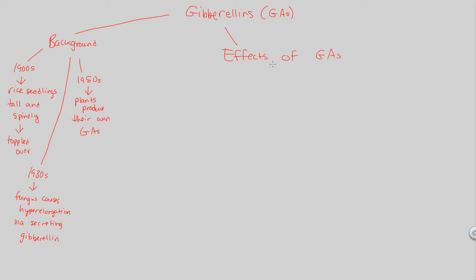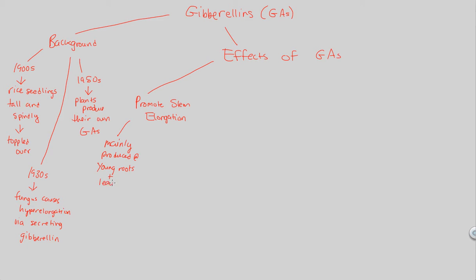Effects of GAs — they have three major effects. First and foremost, GAs promote stem elongation. A lot of plant hormones are involved in growth, and GAs are also involved in stem elongation growth. GAs are mainly produced in growing regions of the plant, specifically those related to the stem — young roots and leaves — because leaves are essentially an elongation from the stem.